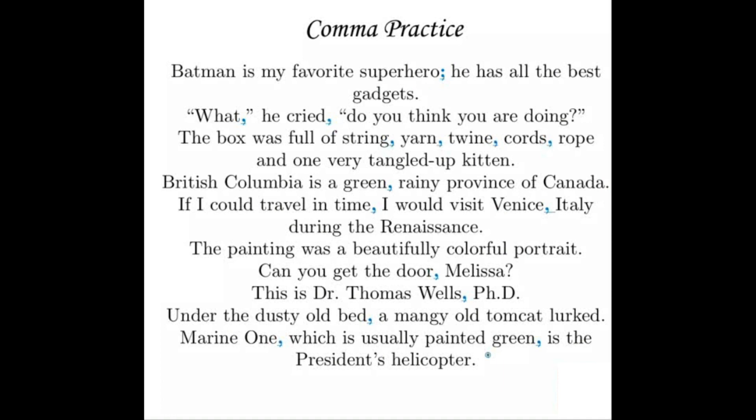Here is where we find our punctuation. First sentence: "Batman is my favorite superhero; he has all the best gadgets." — trick question, this was a run-on sentence. We had two perfectly functional sentences stuck together. You could also say "Batman is my favorite superhero, and he has all the best gadgets." If you're going to join them without a coordinating conjunction, you must use a semicolon. If you used a comma alone, it would be a comma splice — and if you use a comma splice, I will hunt you down.